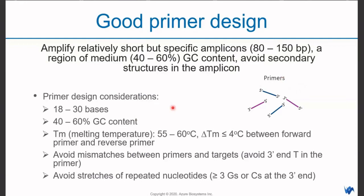A good primer pair should amplify relatively short but specific amplicons, roughly around 80 to 150 base pairs, and generate a region of medium GC content to avoid the formation of secondary structures in the amplicons. Considerations when designing primers include: length between 18 to 30 bases, medium GC content of 40 to 60%, melting temperature within 55 to 60 degrees Celsius, and the difference in melting temperature between forward and reverse primer should not exceed 4 degrees Celsius — best is within 1 degree. Try to avoid mismatches between the primers and the target, avoiding 3' A and T in the primer. We should also avoid stretches of repeated nucleotides, for example more than 3 G's or C's at the 3' end, such as GGG or CCC.